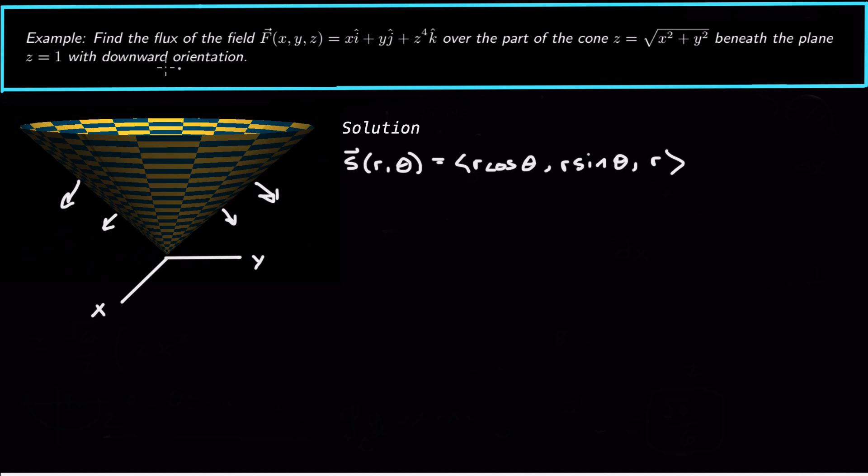Now the cone stops at z equals 1. Well, z is equal to r. So r is going to range from 0 to 1. So 0 less than or equal to r less than or equal to 1. And theta is going to go all the way around the z-axis, so 0 less than or equal to theta less than or equal to 2 pi.